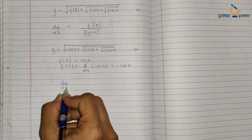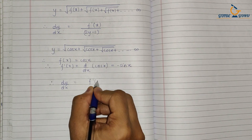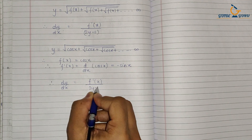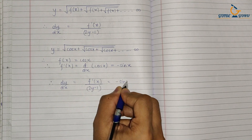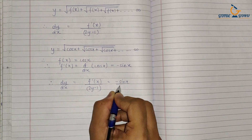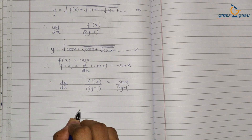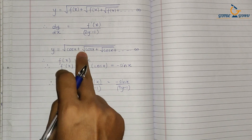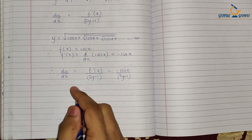So according to the shortcut, the derivative dy/dx is equal to f'(x) upon (2y minus 1), which gives us minus sin(x) upon (2y minus 1). This is the derivative of the function.